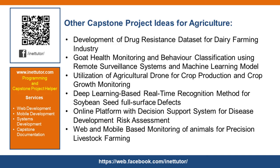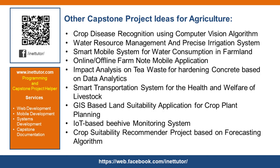Other capstone project ideas for agriculture include: Development of drug resistance dataset for dairy farming industry. Goat health monitoring and behavior classification using remote surveillance systems and machine learning model. Utilization of agricultural drone for crop production and crop growth monitoring. Deep learning based real-time recognition method for soybean seed full surface defects. Online platform with decision support system for disease development risk assessment. Web and mobile-based monitoring of animals for precision livestock farming. Crop disease recognition using computer vision algorithm. Water resource management and precise irrigation system. Smart mobile system for water consumption in farmland. Online/offline farm note mobile application. Impact analysis on tea waste for hardening concrete based on data analytics.